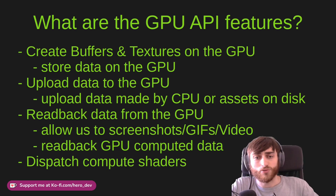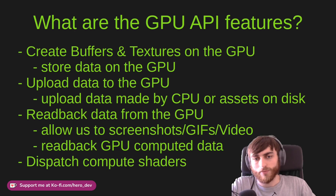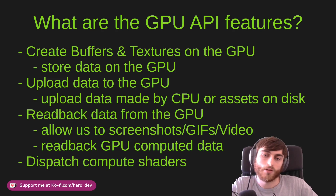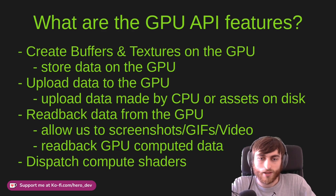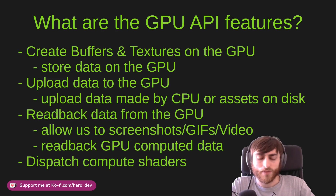We can also upload data to the GPU — data made by the CPU or assets from disk. We also have the ability to read data back from the GPU, which will allow us to take screenshots, create GIFs, or even record video directly in the game. We can also read back data computed by the GPU — for example, something procedurally generated on the GPU — and then use that data on the CPU. Finally, we can launch compute shaders on the GPU and manipulate all the stored data.